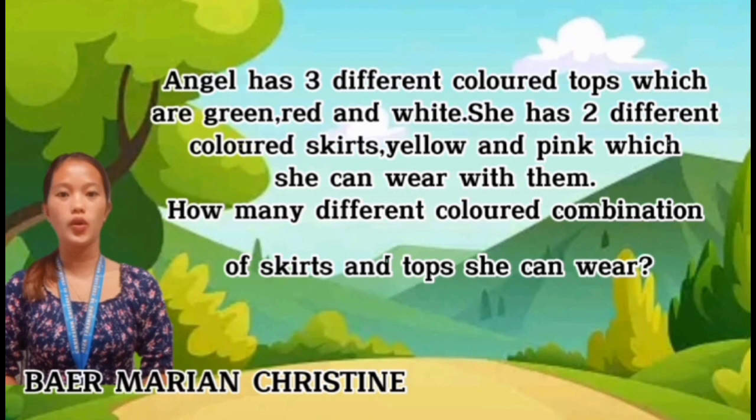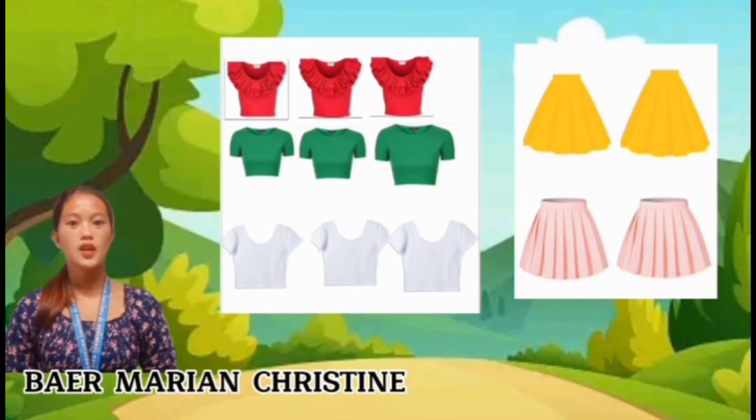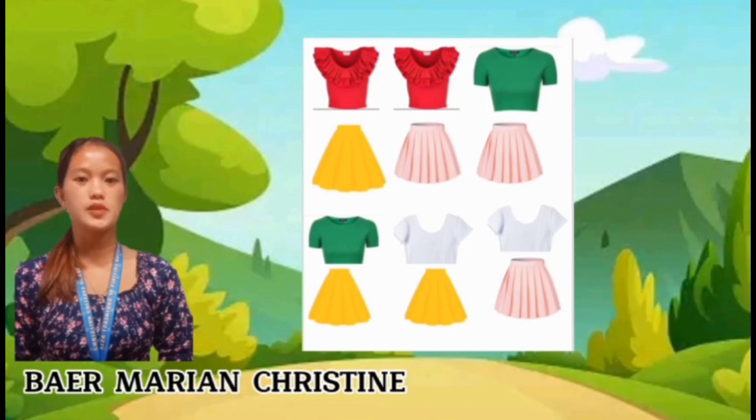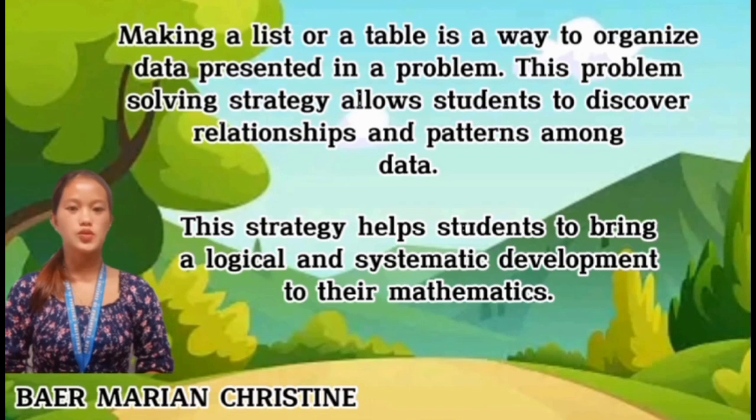Here's the problem: Angel has three different colored tops — red, green, and white. She also has two different colored skirts — yellow and pink — that she can wear with them. How many different combinations of skirts and tops can Angel wear? We have three tops and two skirts, giving us the different combinations. In all, she has six different combinations of tops and skirts.